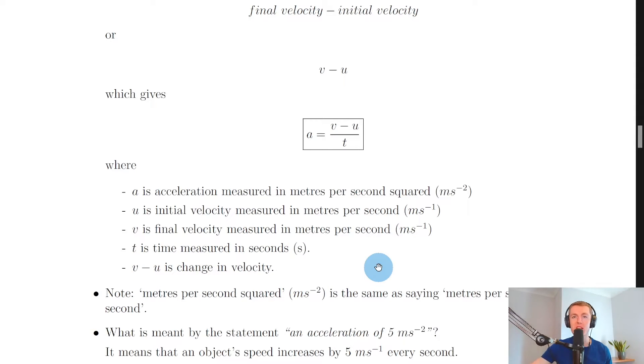It's important not to get mixed up between initial and final velocity and a way that you can remember which one is which is to think about u being before v in the alphabet. So that means u is the first velocity, the initial velocity or starting velocity, and v is going to be the second velocity, the final velocity.